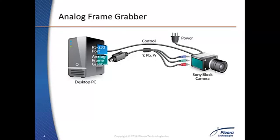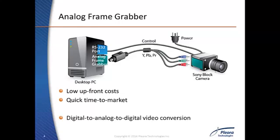A more common way to integrate with these cameras is through the use of an analog frame grabber. While this option provides low upfront cost and quick time to market, it suffers in two major areas. First, the video must be converted from digital to analog inside the Sony block camera, then converted back to digital at the PC, possibly resulting in a loss of quality. Second, separate cables are needed for video, power, and configuration.